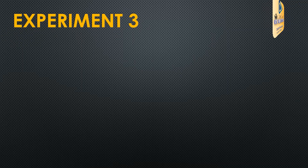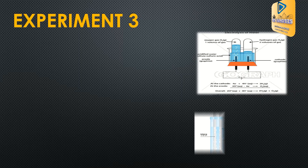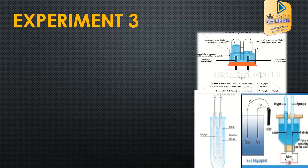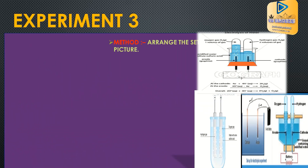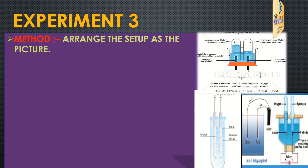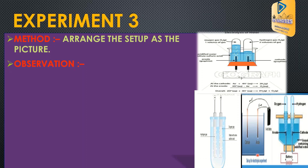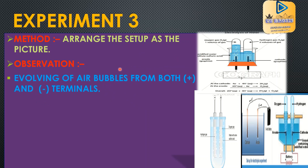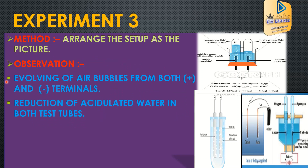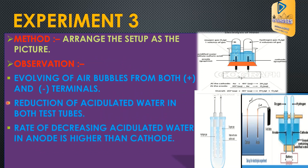Third experiment: first, make two holes in a plastic container, then pass two carbon rods through and seal the holes. After that, fill with acidulated water. You can see in this picture how to arrange the apparatus. In this experiment, you can observe the development of air bubbles from both the positive and negative terminals, and a reduction of acidulated water in both test tubes.